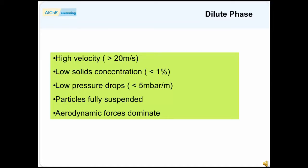Low solids concentrations, for example less than 1% by volume, and low pressure drops per unit length of the transport line, typically less than 5 millibar per meter.